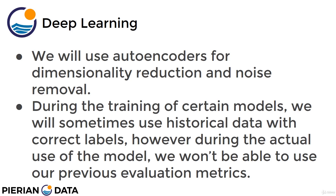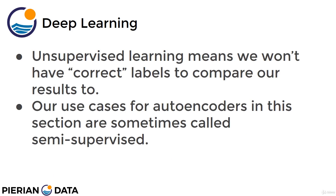During the training of certain models, we actually sometimes get access to historical data with correct labels. However, during the actual use of the model, we won't be able to use our previous evaluation metrics. Unsupervised learning means we don't have those correct labels to compare our results to, and our use cases for these autoencoders are actually sometimes called semi-supervised — not completely unsupervised, but definitely not completely supervised either.